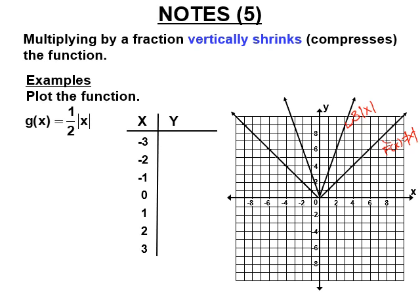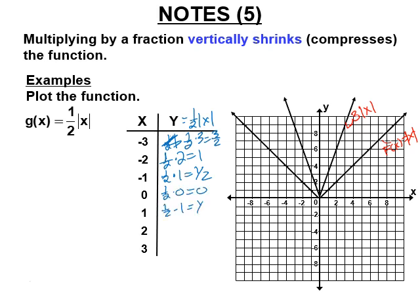For y equals one half times the absolute value of x: one half times the absolute value of negative 3 is one half times 3, which is three halves. The absolute value of negative 2 is 2, and half of two is 1. One half times 1 is one half; one half times zero is zero. These are symmetrical, and when plotted, negative three maps to 1.5, negative two to 1, negative one to 0.5 — and that gives the vertical shrink of the absolute value of x.